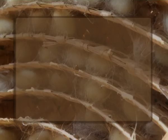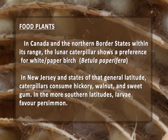Food plants: in Canada and northern border states, the lunar caterpillar shows a preference for white or paper birch, Betula papyrifera. In New Jersey and states of that general latitude, caterpillars consume hickory, walnut, and sweetgum. In the more southern latitudes, larvae favour persimmon.